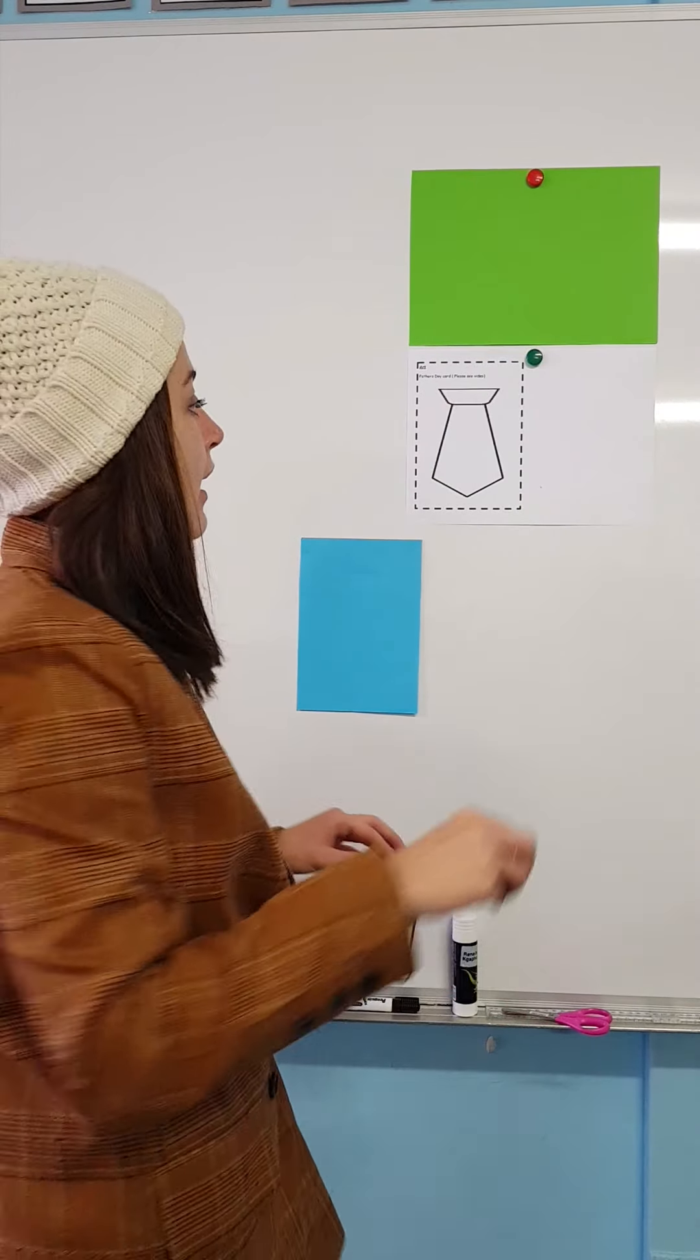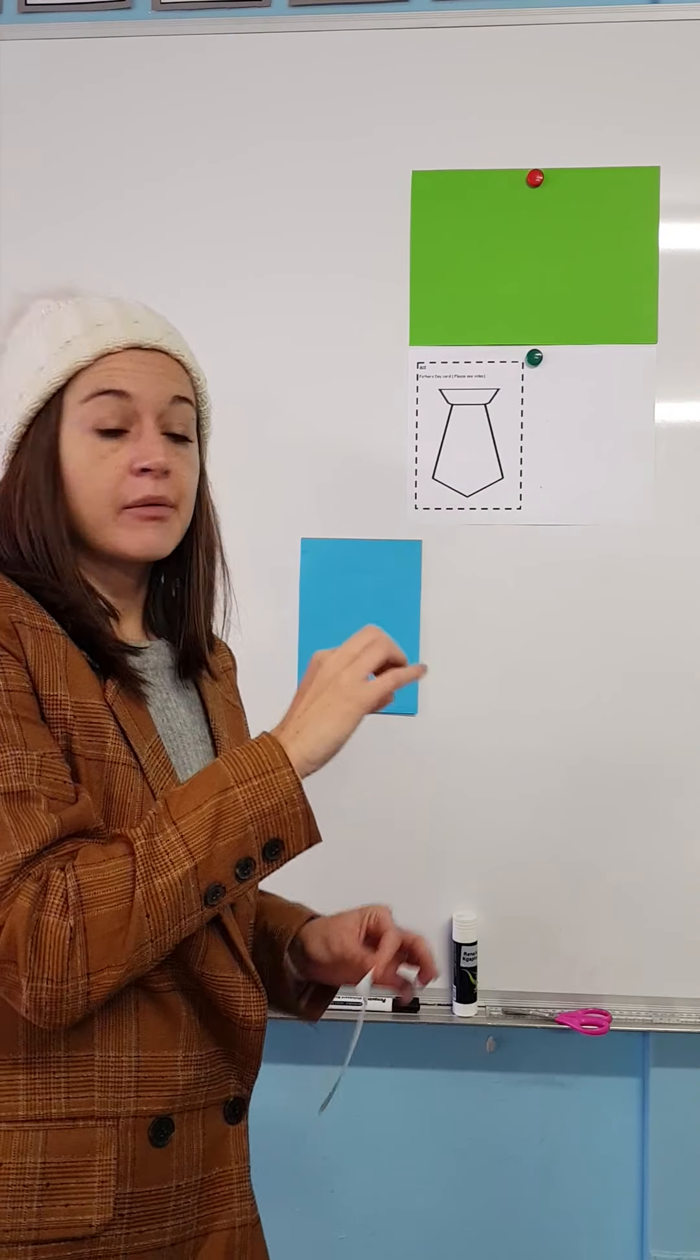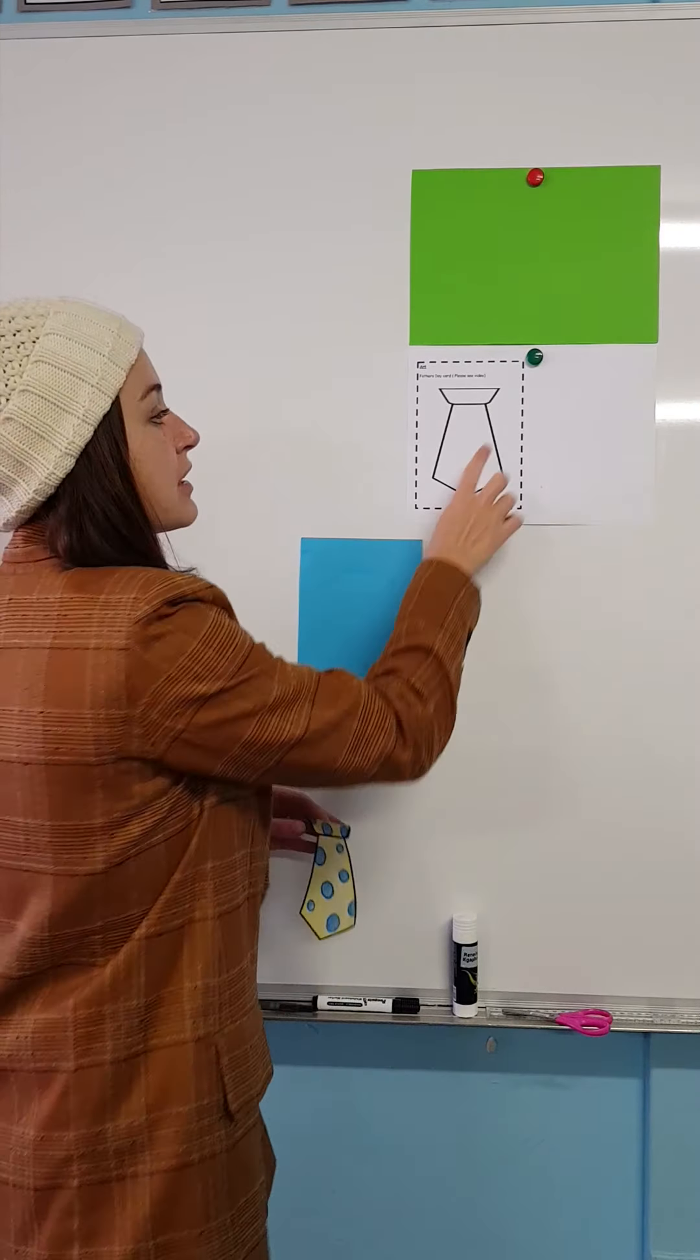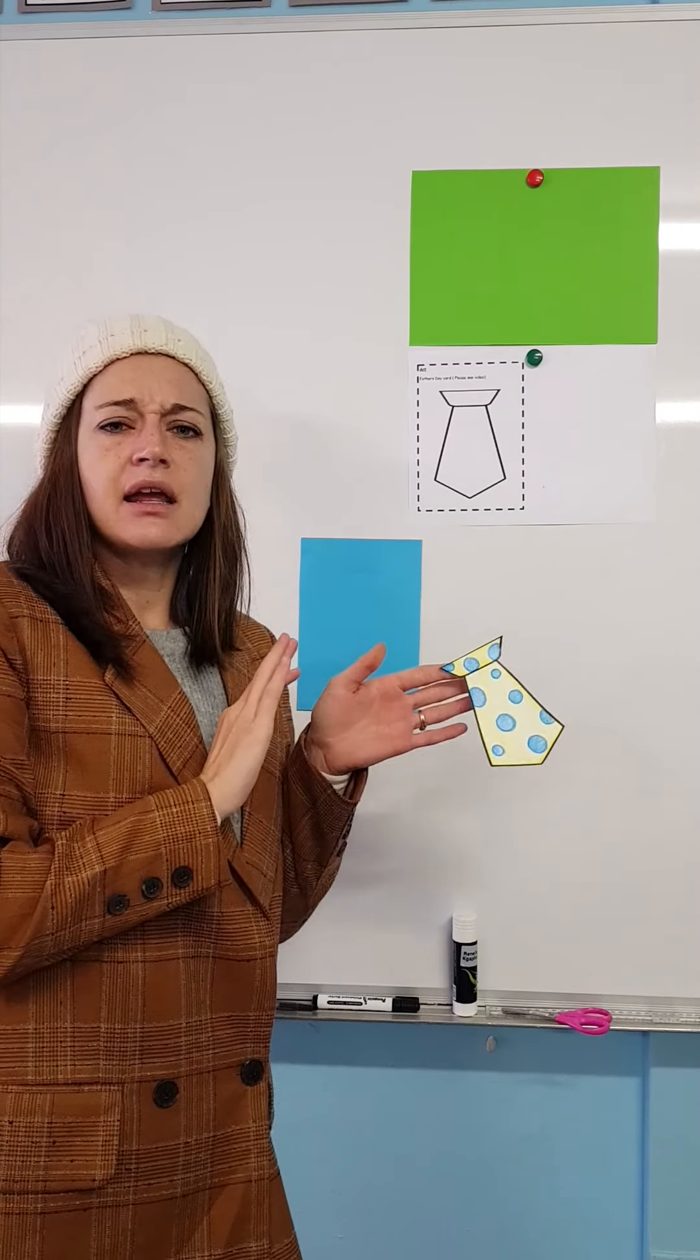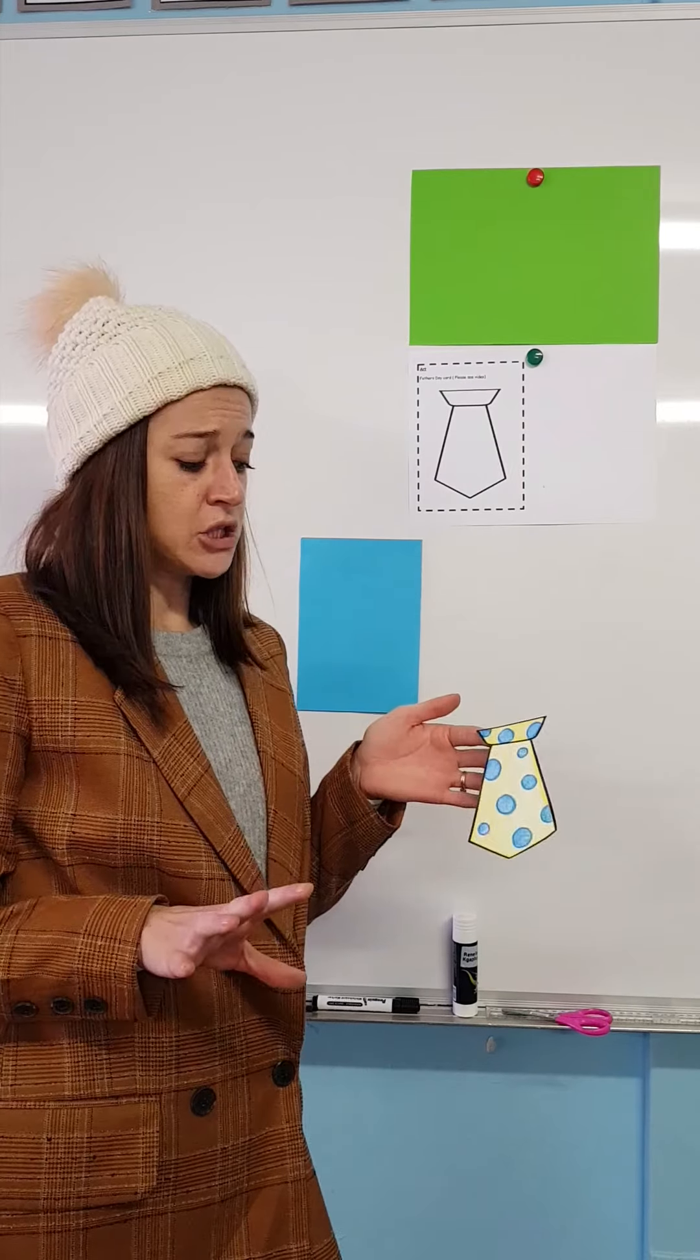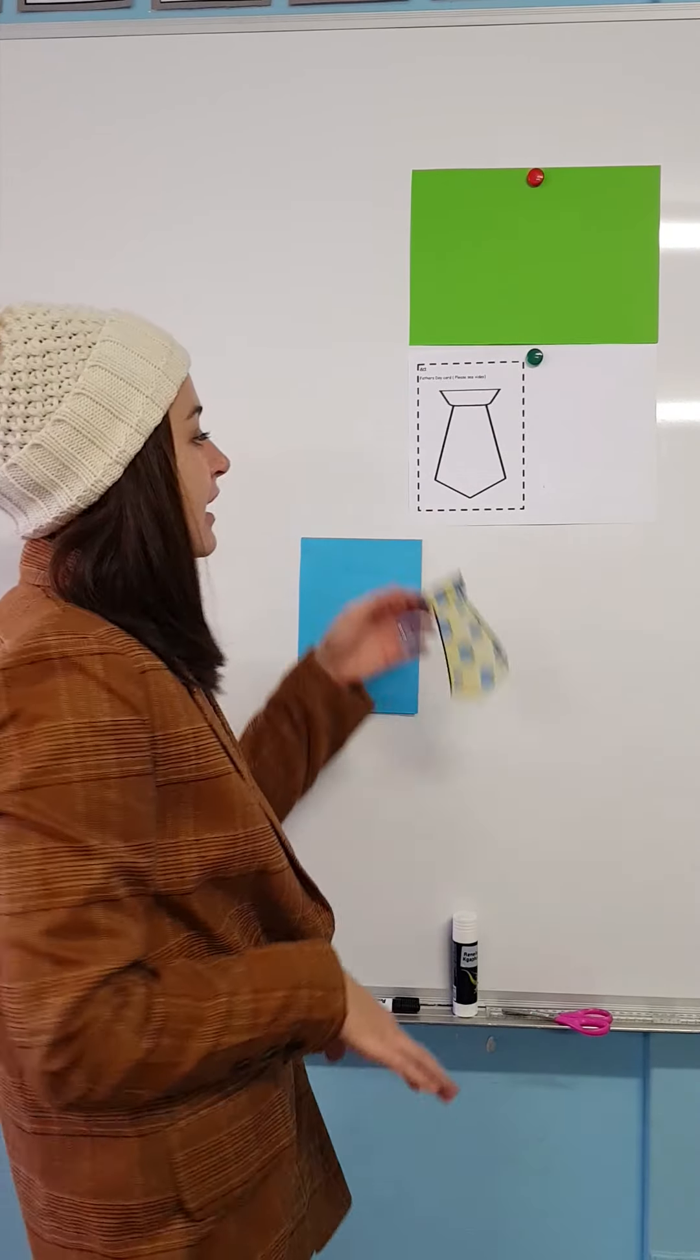You'll also need your tie that is in your homework papers. There's a tie that you are going to color and decorate in whichever way you want to. You can make stripes, dots, any color you call it, then you cut it out.